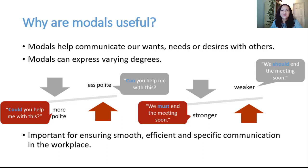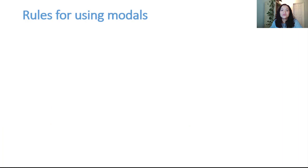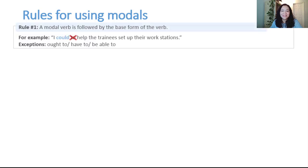Before we get started on the functions associated with modal verbs, let's consider some important grammar points about using them. Rule number one: a modal verb is usually followed by the base form of the verb without to. For example, I could help the trainees set up their workstations, not I could to help the trainees set up their workstations. Exceptions to this rule include ought to, have to, and be able to.